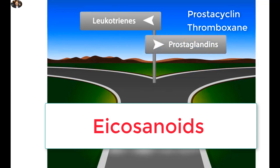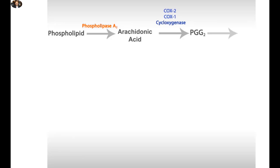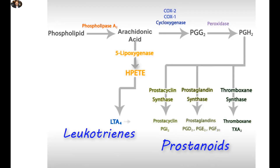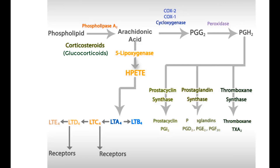Eicosanoids are strongly involved in mediating inflammation; therefore all eicosanoid inhibitors work as anti-inflammatory agents. Starting from the early step in the eicosanoid production pathway, corticosteroids, specifically the glucocorticoids, interfere with the phospholipase A2 enzyme, therefore interfering with the production of almost all types of inflammatory eicosanoids.